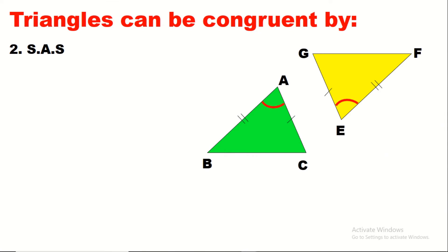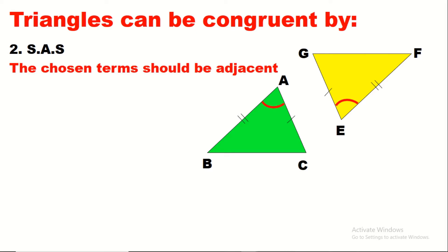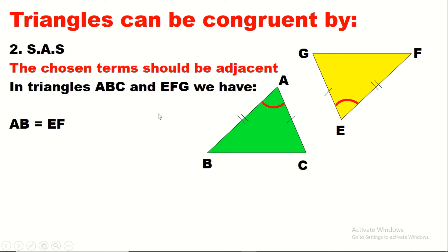The second method is Side-Angle-Side (SAS). Something very important: the chosen terms must be adjacent to each other. As you see in the figure, it is side, then angle, then side — directly next to each other, adjacent. To prove these triangles congruent, we say: in the two triangles ABC and EFG, we have AB equal to EF. We write lengths without the angle symbol.